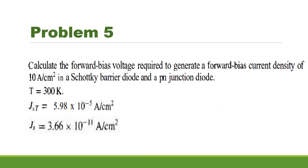Next problem: calculate the forward bias voltage required to generate a forward bias current density of 10 A/cm² in a Schottky barrier diode and a P-N junction diode. The temperature is given as 300 K, JST = 5.98 × 10⁻⁵ A/cm² for the Schottky diode, and JS = 3.66 × 10⁻¹¹ A/cm² for the P-N junction diode.